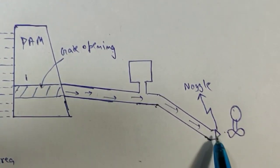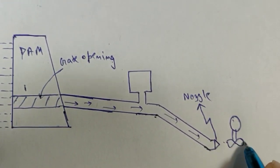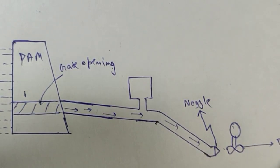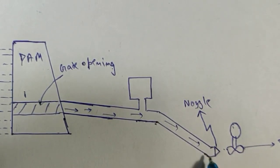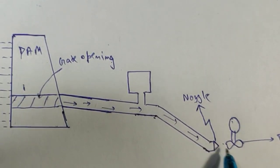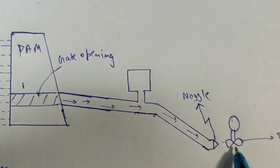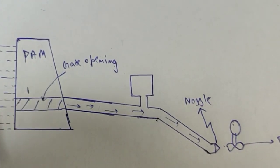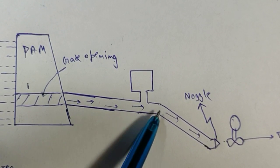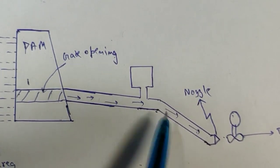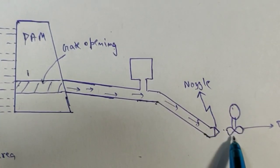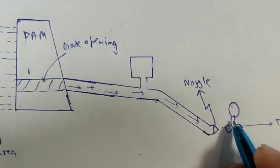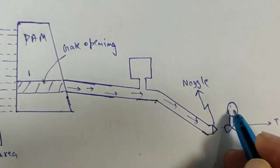This is our turbine. The water hits and rotates the turbine. First, the potential energy of water is converted into kinetic energy, and then this kinetic energy is converted into mechanical energy of the turbine.